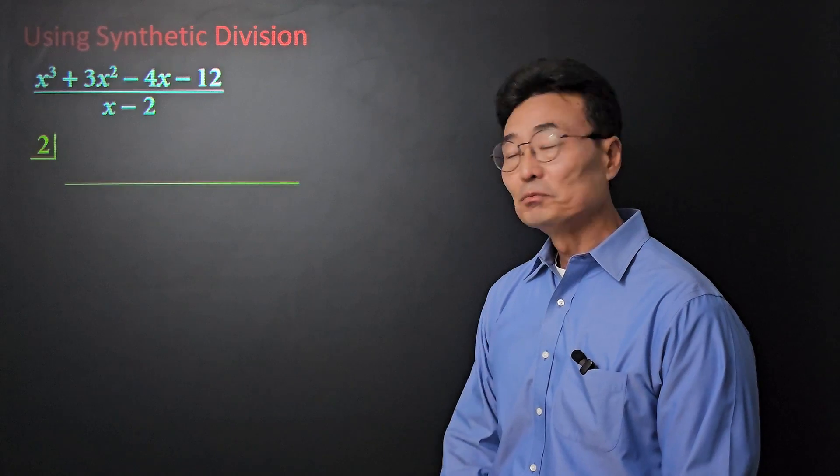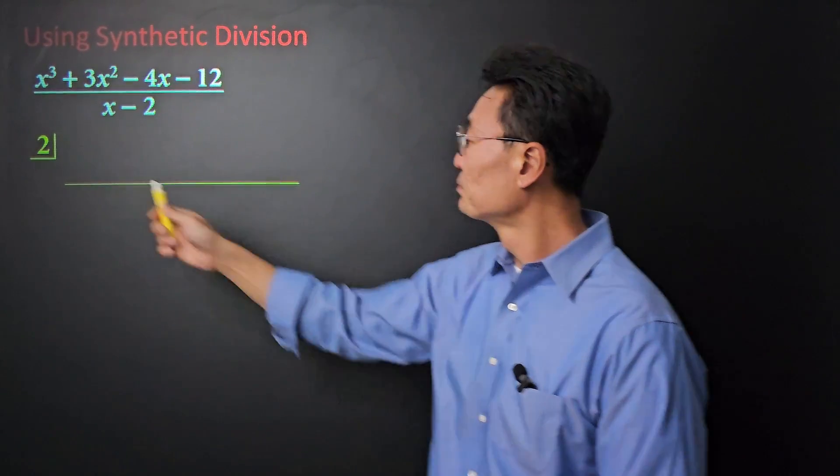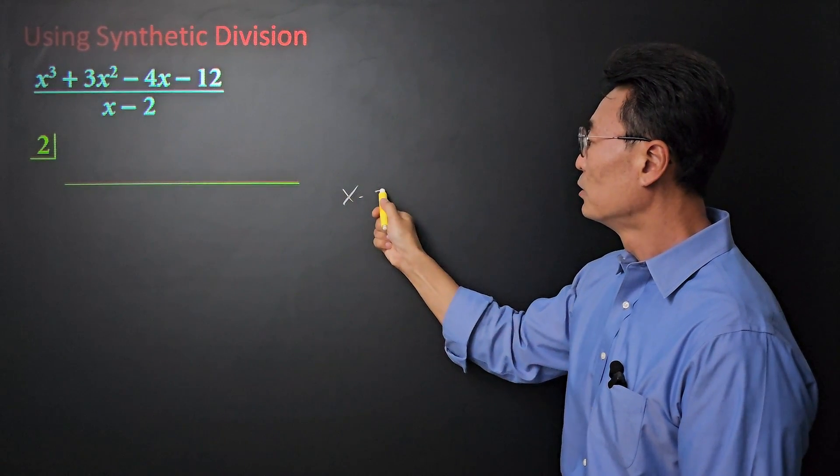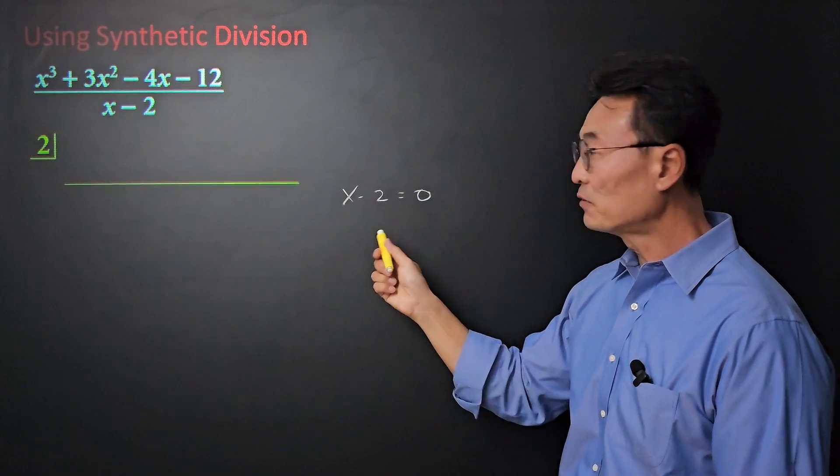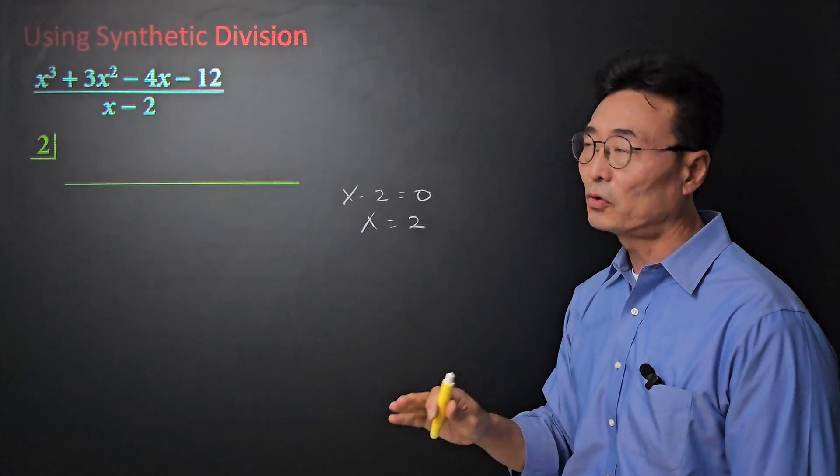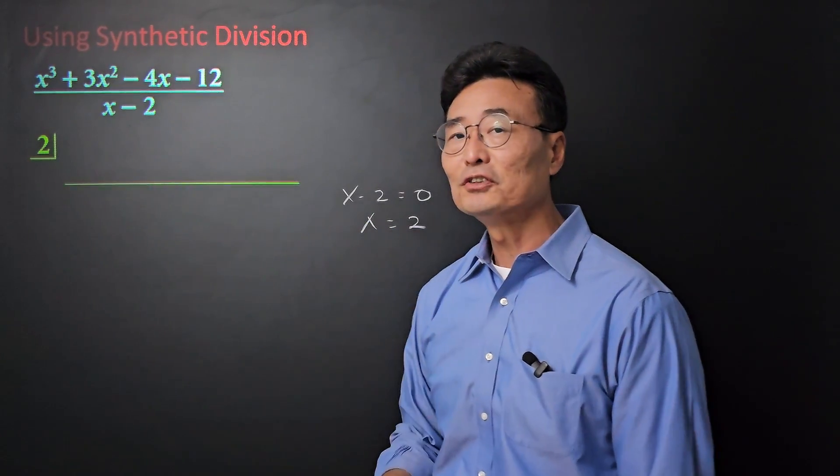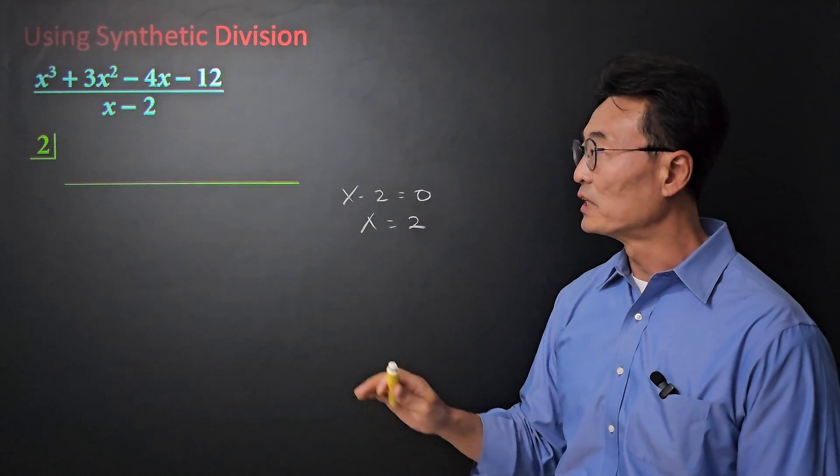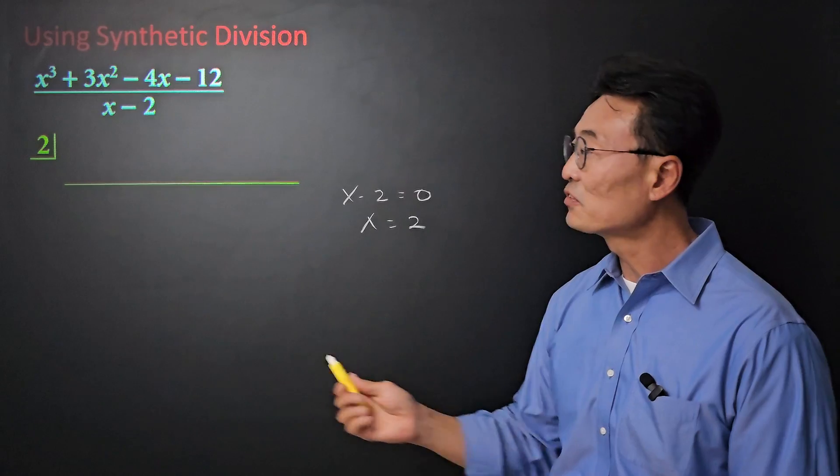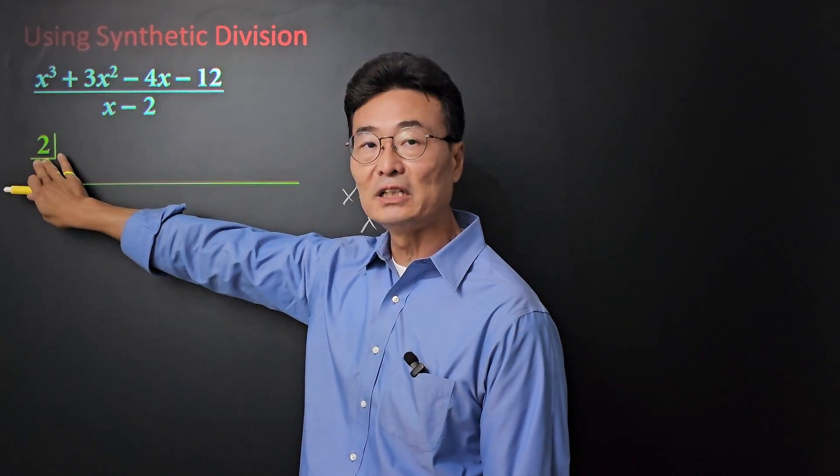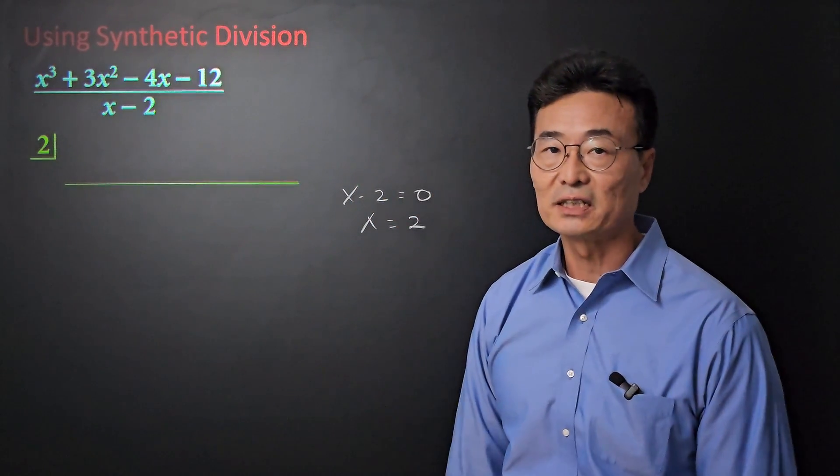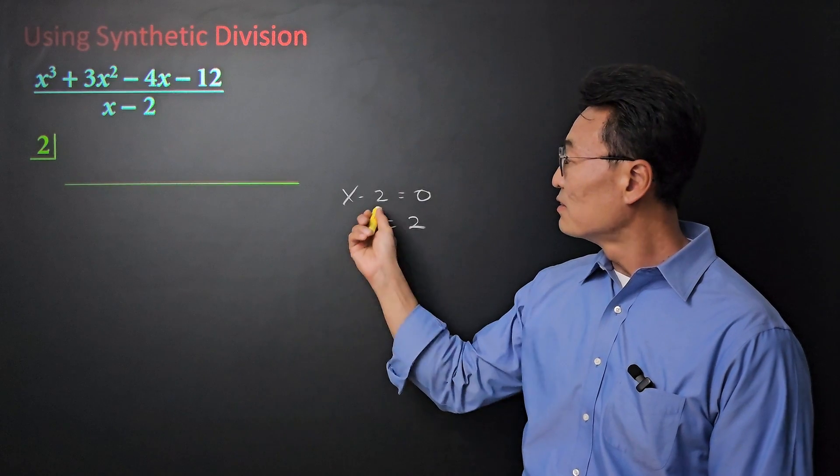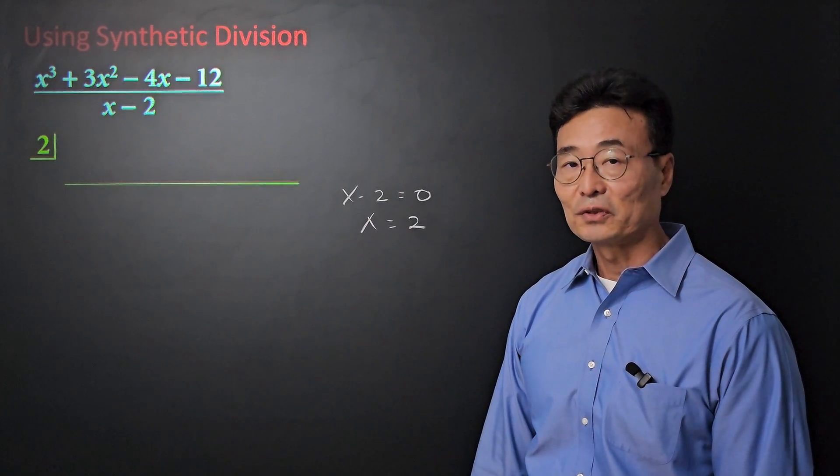To start, what we're going to do is take that x minus 2, whatever is in the denominator, and we set that equal to 0 and solve for x. Then x equals 2. Of course, x can't be 2 because that would make the denominator 0. However, we're not setting x equals to 2. We're just finding the number to put on the left here for the synthetic division, which is going to be the value of x setting the denominator equal to 0.